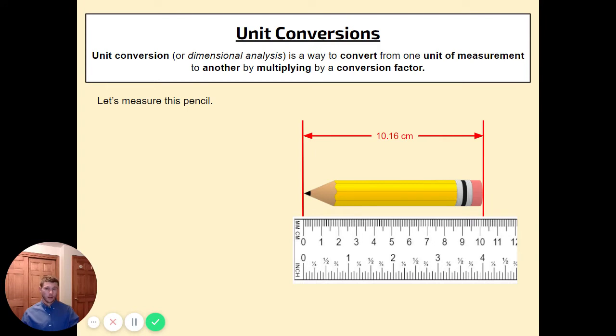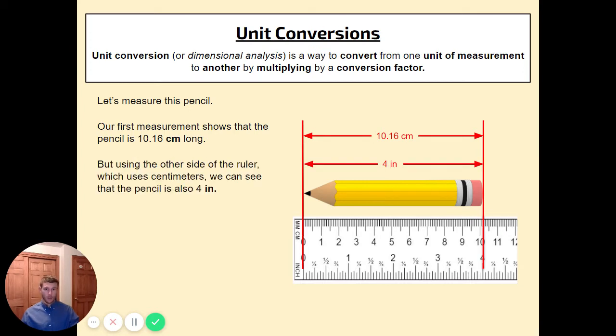First, we make this measurement and it's clear that the pencil is exactly 10.16 centimeters long. Now we can use the bottom part of the ruler to make another measurement. Here we see that the pencil is exactly four inches long. Now how could this be? We have 10.16 centimeters and we have four inches, but they're both the same pencil, right? So this must mean that the two numbers here are exactly the same.